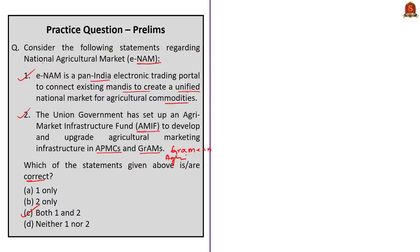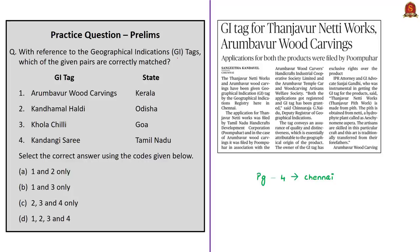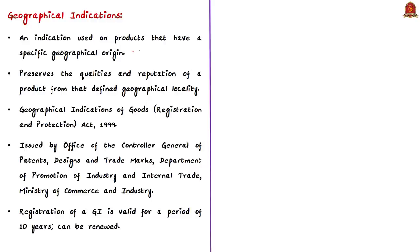Let's move on to the next news article analysis. This question is based on geographical indications. The relevant syllabus for this topic is current events of national importance for your prelims examination. We often come across news on new GI tags, which are relevant for your socio-economic life and also for your prelims examination. A geographical indication is an indication used on products that have a specific geographical origin, and this tag preserves the qualities and reputation of a product from that defined geographical locality.